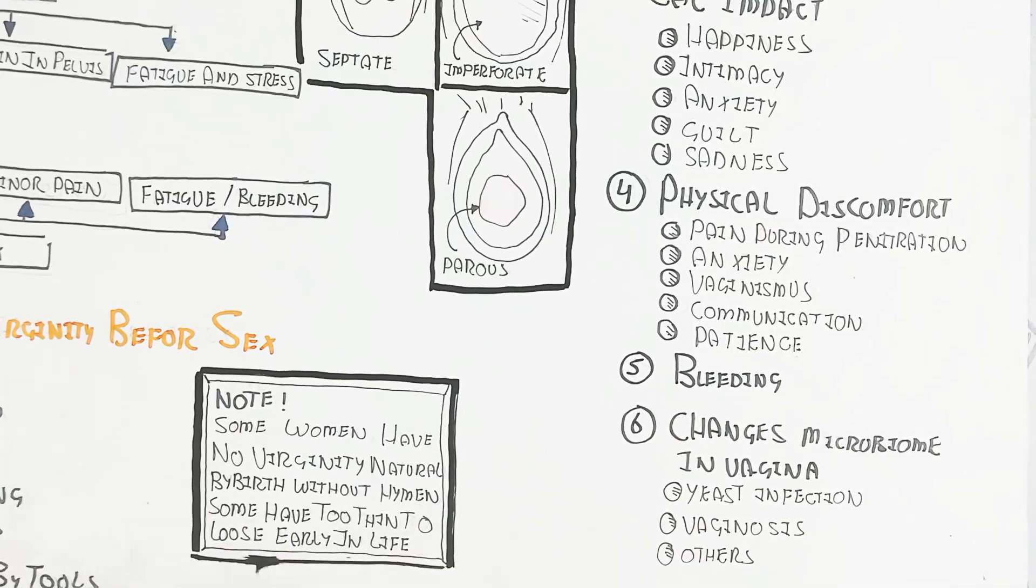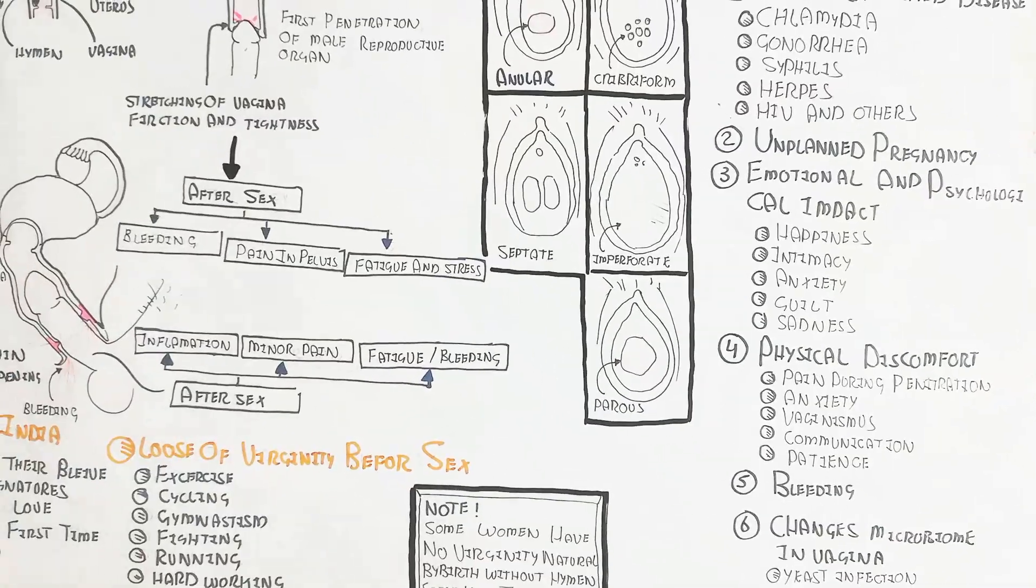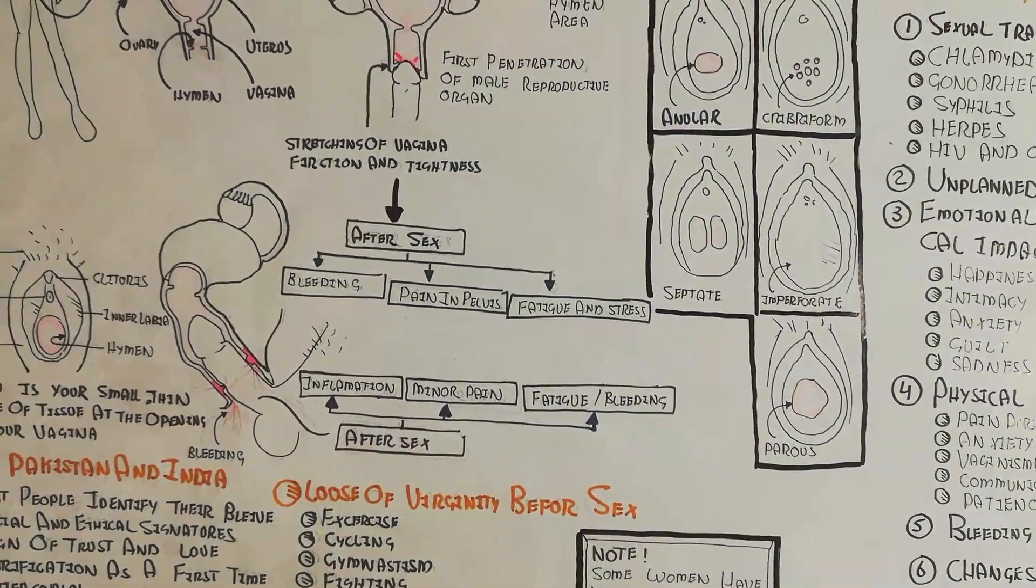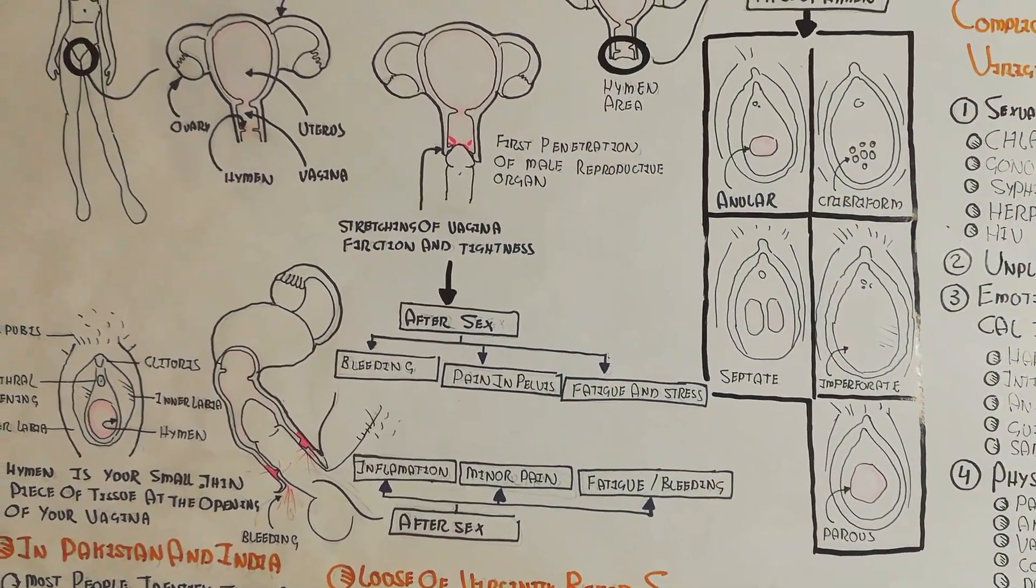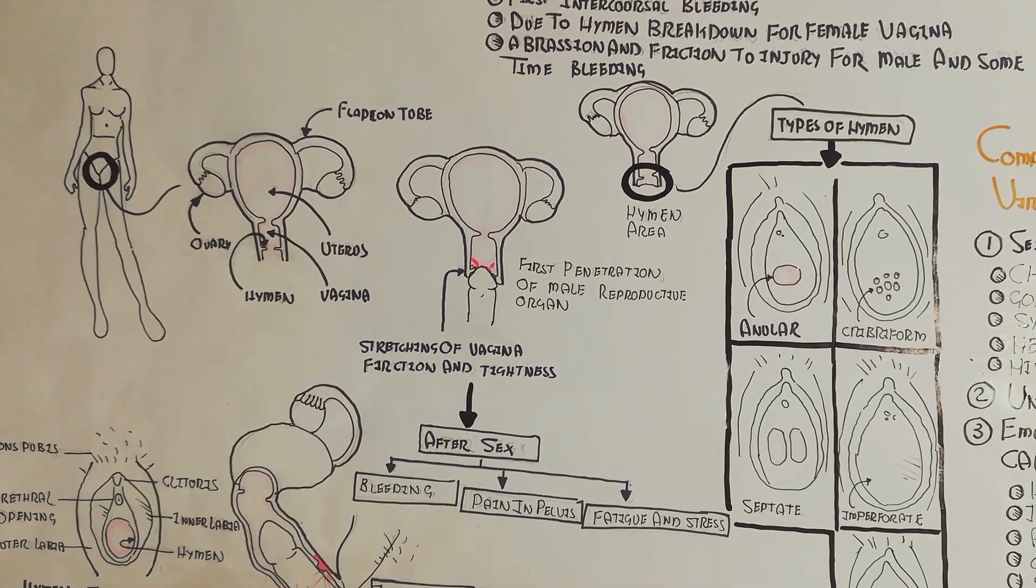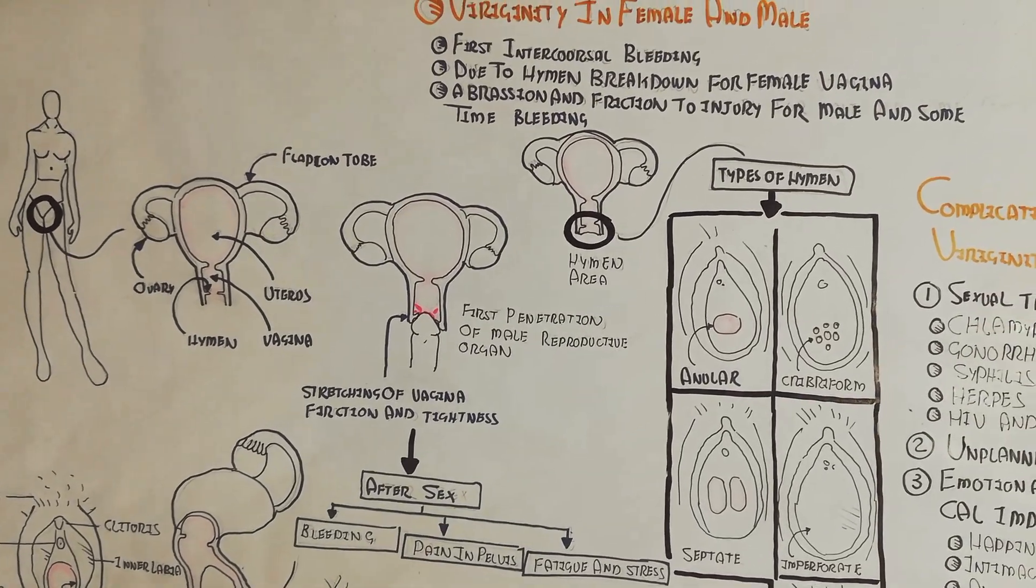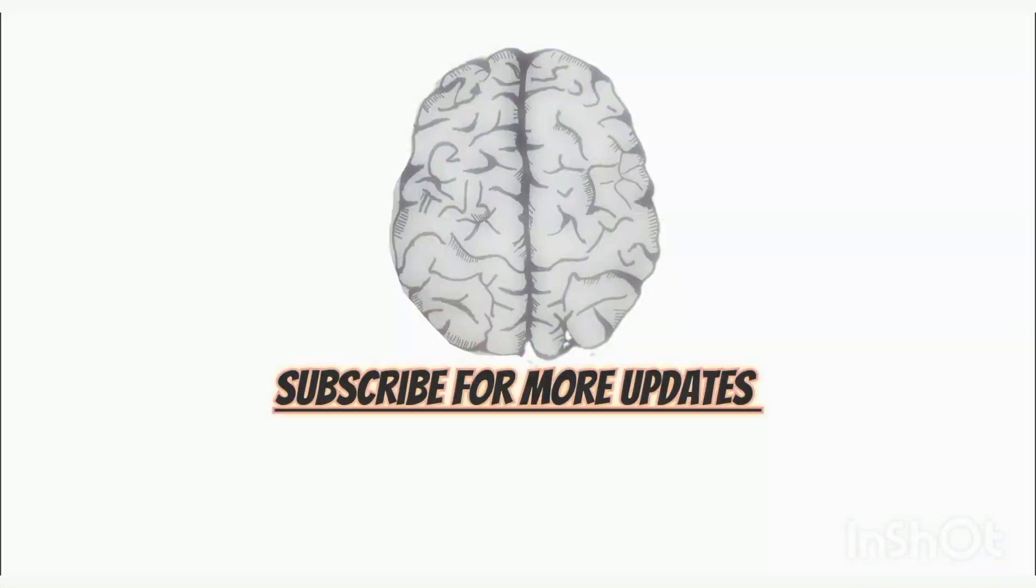What is virginity? Virginity is the hymen, a thin membranous tissue. Rupture during first intercourse will lead to rupture and show the sign of virginity. Thanks for watching, see you in the next video. Bye.